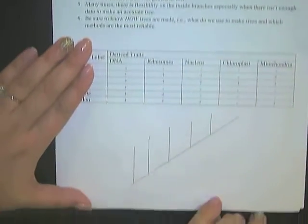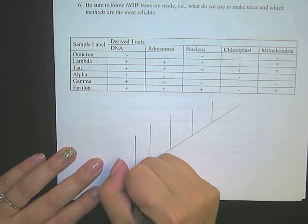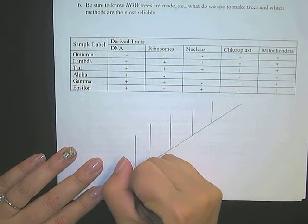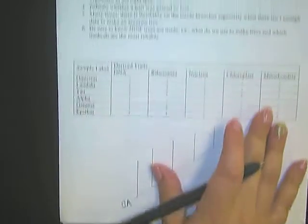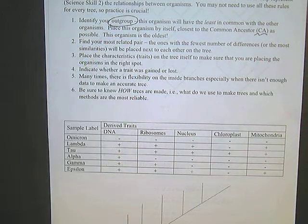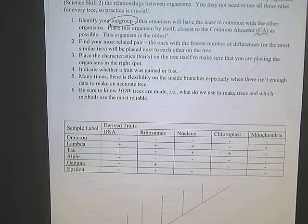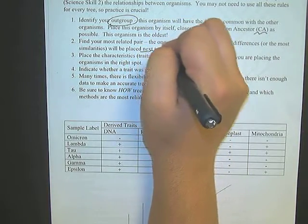So your common ancestor on a cladogram like this will be located all the way to the left. I tell students it's a good habit before you even get started to just go ahead and write CA for common ancestor, and then your organisms are going to go on the different branches. So once you have identified your outgroup, the next thing you're going to want to do is find the pair that is most related. They are going to be closest together on the tree.